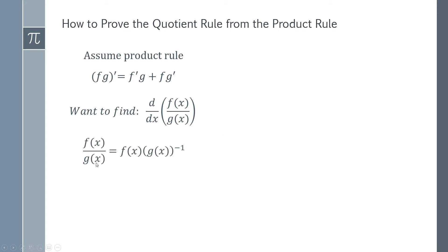We can take this g(x), move it to the top by changing it to a minus one power. So we have f(x) multiplied by g(x) to the minus one. This is a product with a multiplication here, and we've assumed that the product rule is true, so we could use the product rule to find the derivative.